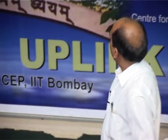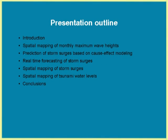Good afternoon everybody. I am going to provide some application of genetic programming which is widely used for coastal and ocean problems. A number of problems are studied using GP and then relatively compared with the ANN approach. This is a short outline of the presentation: some problems based on spatial mapping of monthly maximum wave heights, then storm surge problems, cause-effect modeling, real-time forecasting, spatial mapping, and if time permits, tsunami water levels using GP and ANN.